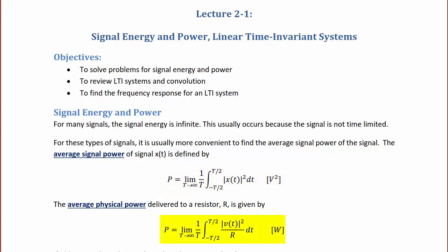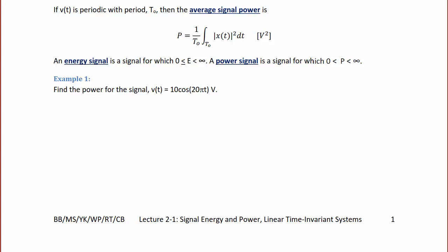The average physical power delivered to a resistor is given by P equal to the limit as T goes to infinity of one over T, the integral from negative T/2 to T/2 of the absolute value of v(t) squared divided by R dt, and the units will be watts. You should be most familiar with average physical power from your circuits analysis course. If v(t) is periodic with period T-naught, then the average signal power is P equal to one over T-naught, the integral over one period of the magnitude of x(t) squared dt, with units of volts squared.